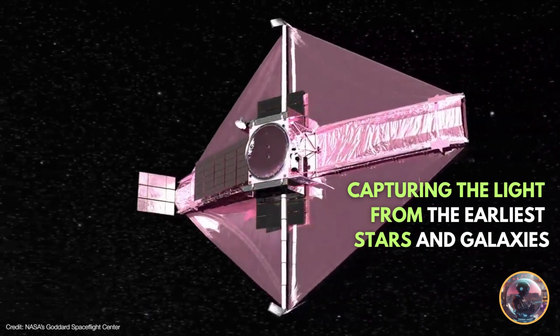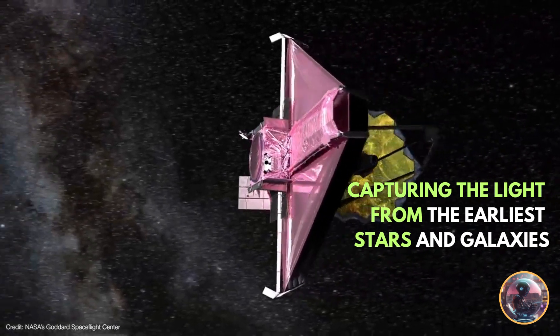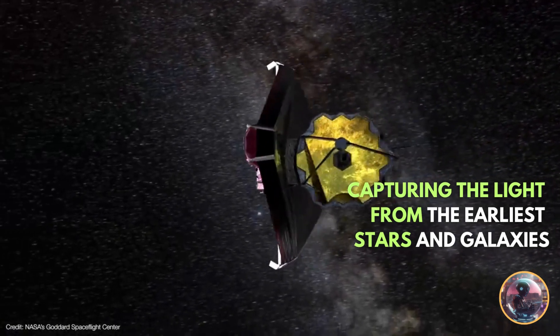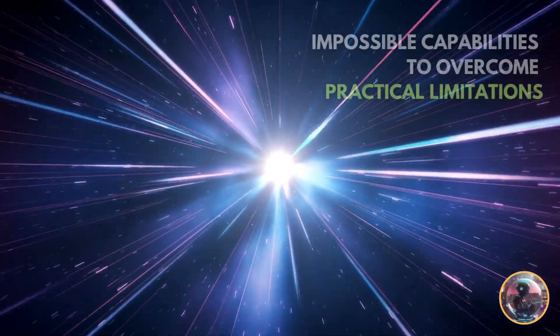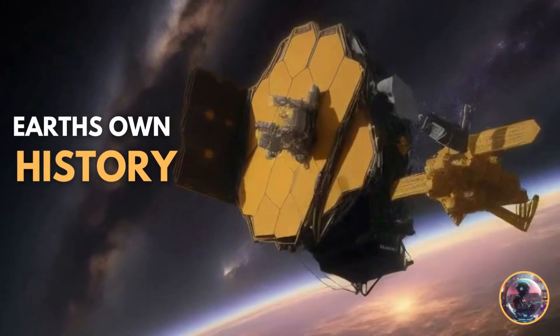Imagine if JWST, or any telescope, was far enough from Earth and pointed back at our planet. With impossible capabilities to overcome practical limitations, it could, in theory, observe Earth's own history.